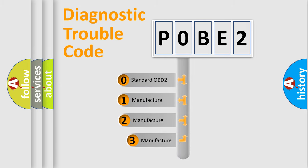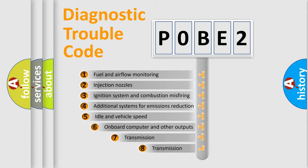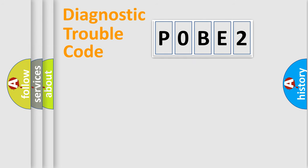If the second character is expressed as zero, it is a standardized error. In the case of numbers 1, 2, 3, it is a more prestigious expression of the car-specific error. The third character specifies a subset of errors. The distribution shown is valid only for the standardized DTC code.